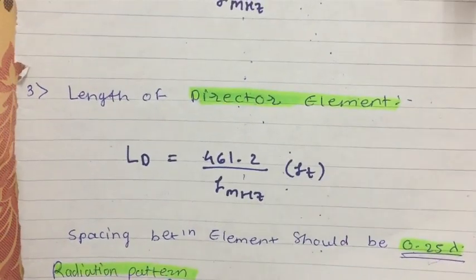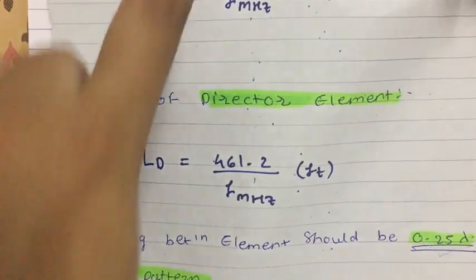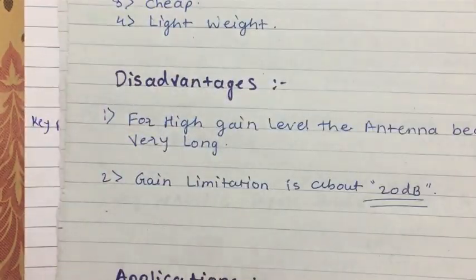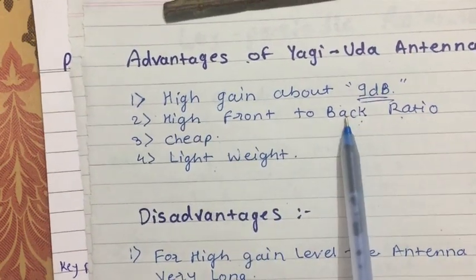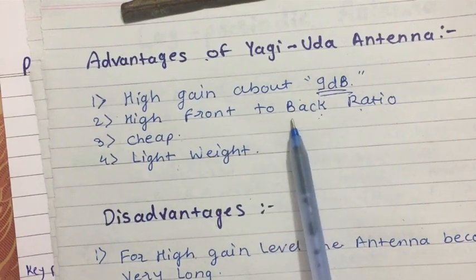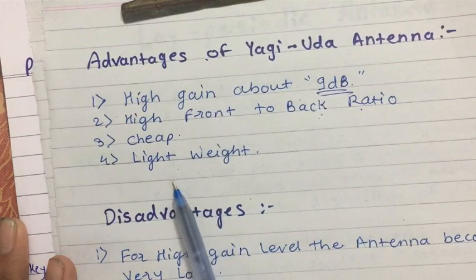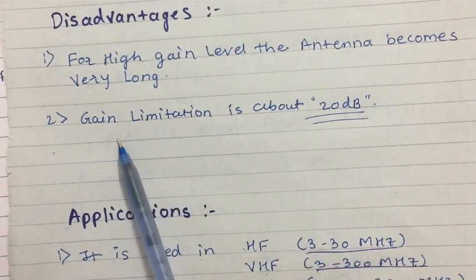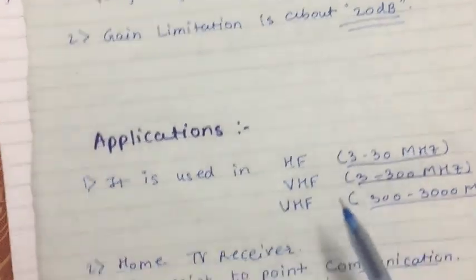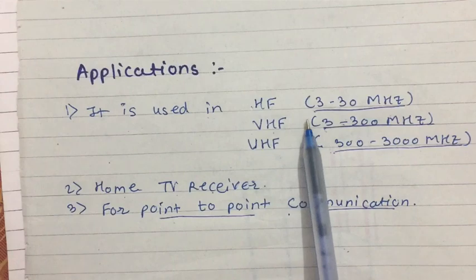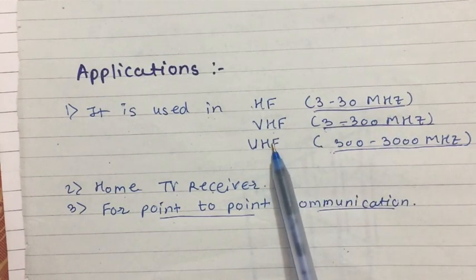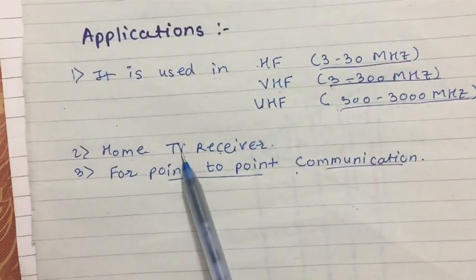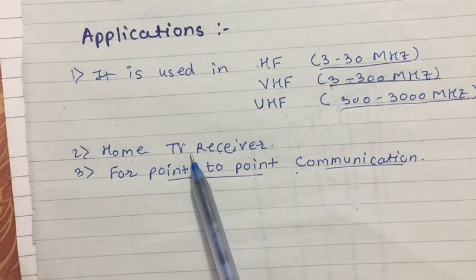The spacing between elements should be 0.225 lambda — this is important to remember when designing a three-element Yagi-Uda antenna. Advantages of Yagi-Uda antenna include high gain of about 9 dB, a high front-to-back ratio, and it is lightweight. Disadvantages include the antenna becoming very long for higher gain, and gain is limited to about 20 dB. Applications include HF range (3 to 30 MHz), VHF, UHF (300 to 3000 MHz), home TV reception, and point-to-point communication.